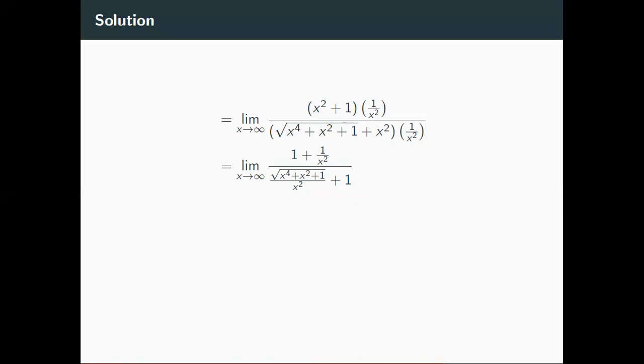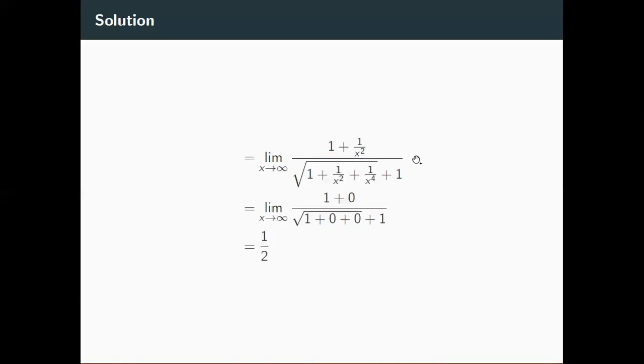And now I can further simplify this square root, I can bring this x squared inside the square root. So what I'll do is I'll square it so that it goes inside the square root. And then I can simplify by each of these pieces. So now this becomes a one, this becomes a one over x squared, this becomes a one over x to the fourth.